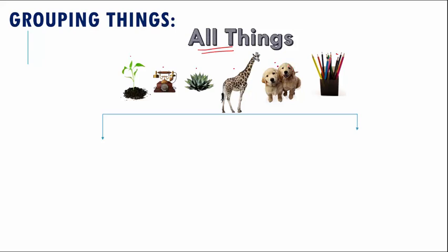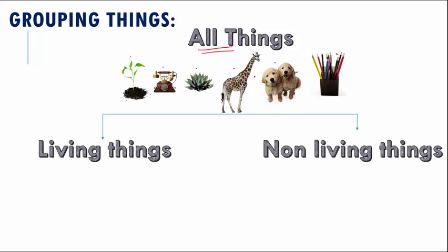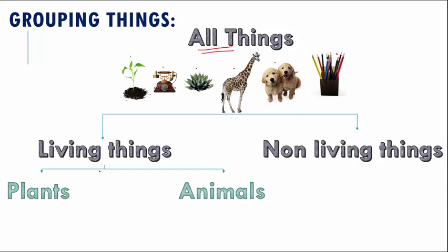Now let's try and categorize all of these one by one. Does the green plant come under living or non-living? If you said living, then it is absolutely correct — it is living, and under living we can put it under plants. What about the telephone? It is a non-living thing, so we put it under non-living things. What about the second plant? It's a living thing and it is a plant, so let us put it under plants.